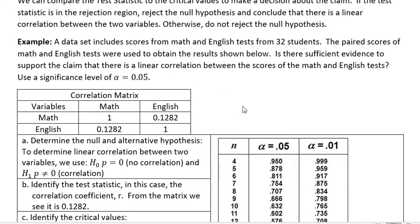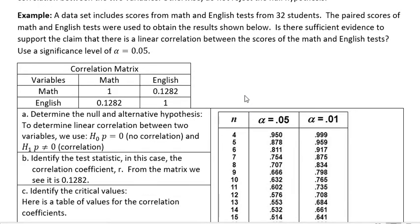In this problem I'm not asking you to calculate anything, just to make a decision. So the correlation matrix is for math and English, our variables. For English and math, the correlation is 0.1282. That's the correlation score.